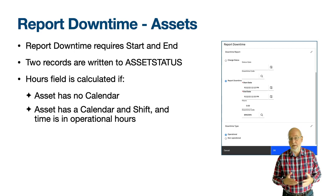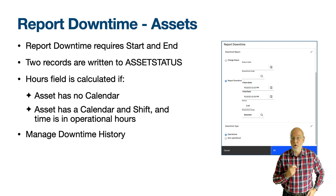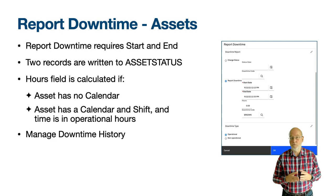The Manage Downtime History action in the Assets application allows you to see all the downtime records for the asset, whether made direct against the asset or via work order. It is how you can verify the accumulated hours that is shown in the Total Downtime field on the Assets main tab. Most of the fields in this dialogue can be modified including the start date and end date, but there are validations to ensure that you do not overlap the records.